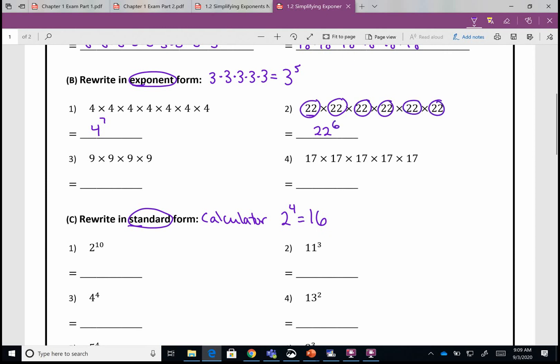In number three, my base will be nine and I do that one, two, three, four times. In number four, my base is going to be 17 and I multiply that one, two, three, four, five times. When you want exponent form, you're going to take all those numbers that are being multiplied and write them instead using a base and an exponent.